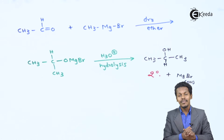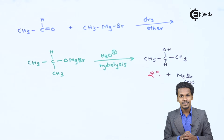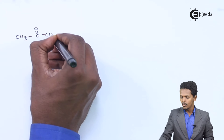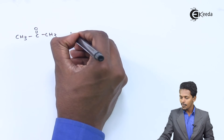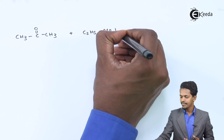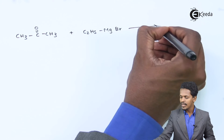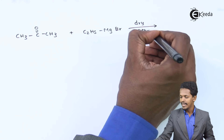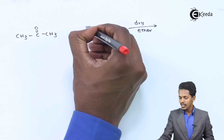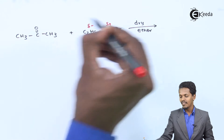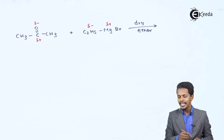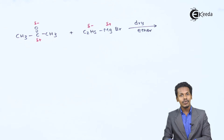Now let me give you an example when a ketone is reacted with a Grignard reagent. Suppose we have CH3-CO-CH3, which is acetone (propanone), and this is reacted with C2H5MgBr. The C2H5 group has a partial negative charge, MgBr has a partial positive charge, the carbonyl carbon has a partial positive charge, and the oxygen has a partial negative charge.